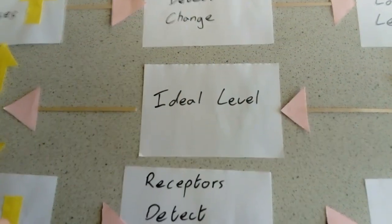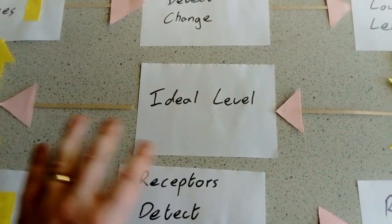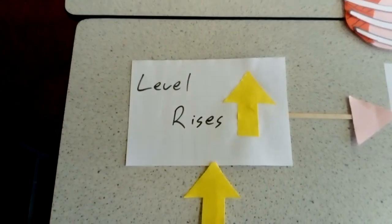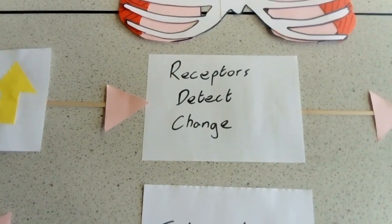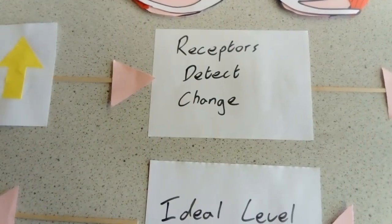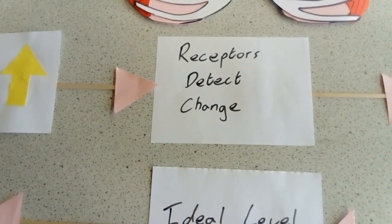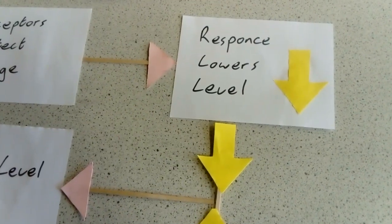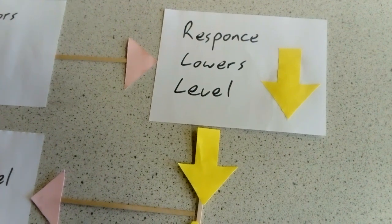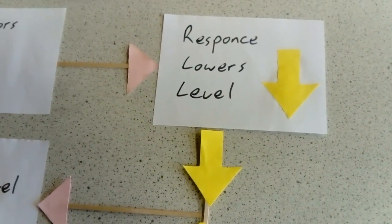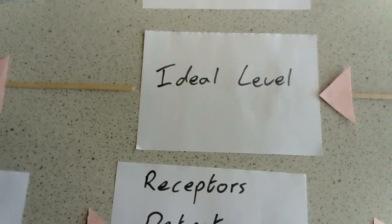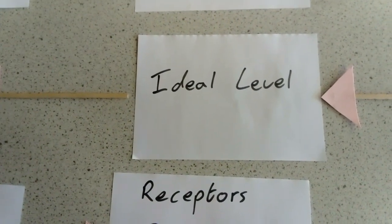The body, for everything — it might be glucose concentration or various things — wants to get back to an ideal level. So if that level rises, that is then detected by some sort of receptors. Those receptors will go and cause a response that will occur, which will, in turn, cause that level to decrease and we'll get back to that ideal level.